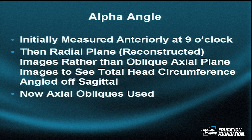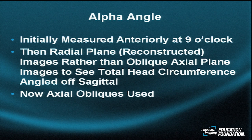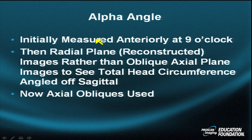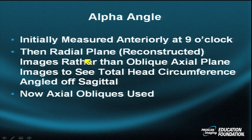The alpha angle is initially measured anteriorly at the nine o'clock position, then a radial plane is reconstructed. Images from the radial plane — rather than oblique axial plane images — are used to see the total femoral head circumference angled off of a saddle. The alpha angle will be acquired off of an oblique axial, and then the overall shape of the femoral head and neck is visually assessed through a series of radial images acquired off of a sagittal in multiple radial orientations.